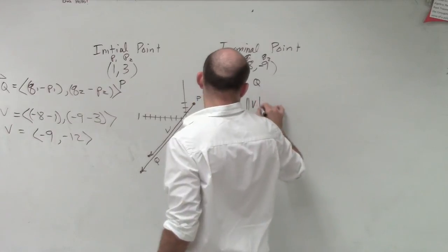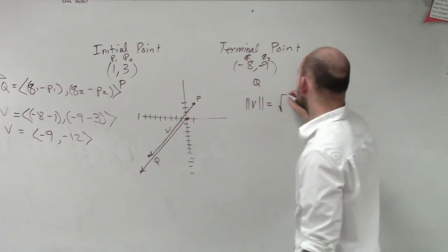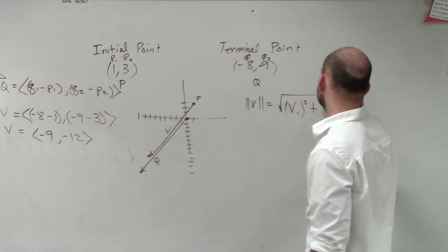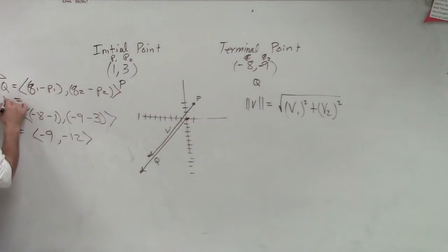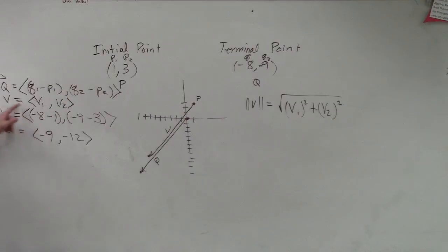So remember, the magnitude of our vector V is going to equal square root of V1 squared plus V2 squared. Now remember, ladies and gentlemen, when I'm looking at component form of vector, component form of vector is V1 comma V2. So to find V1, V2, we had to do Q1 minus P1 and Q2 minus P2, right? So do we already know what V1 and V2 are? Yeah, negative 9 and negative 12.